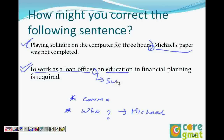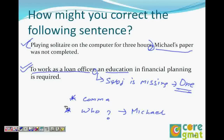The subject is missing. If we put in 'one', it gives clarity: to work as a loan officer, one needs education and financial planning. Students sometimes get confused thinking we don't have that information — like if the answer choice says 'John needs an education and financial planning', they say we don't know if it's John. But in sentence correction you don't need to go there. The subject is missing and the subject can be anywhere — if you put John it can also be fine.